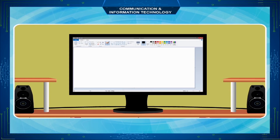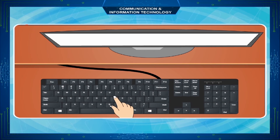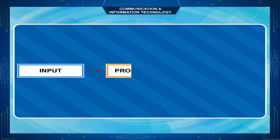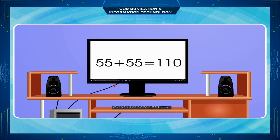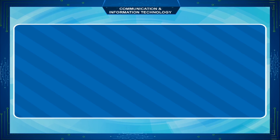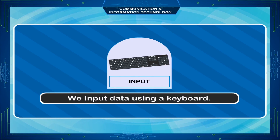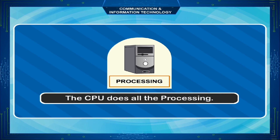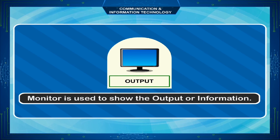The input-processing-output cycle: we give data to a computer along with instructions and it gives us the output after processing the data. For example, we may give two numbers as data along with the instructions to find the total of these two numbers. A computer works with these three steps: Input, Processing, Output. We input data using a keyboard, the CPU does all the processing, and the monitor is used to show the output or information.